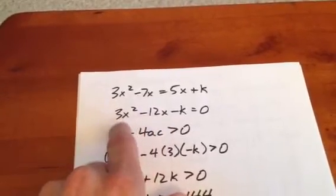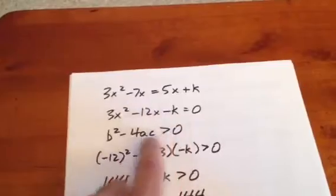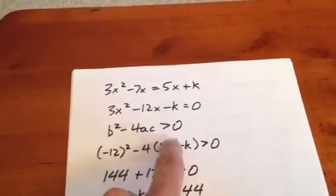Well, b is negative 12, a is 3, and c is negative k. So when we substitute that into this expression,